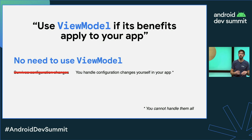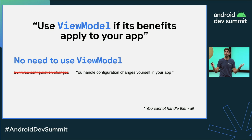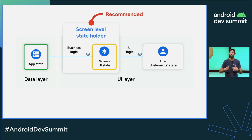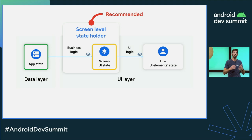For example, the wallpaper change on Android 12 and above devices cannot be handled. And let's say you don't need to use Navigation or Hilt because you have your own solutions — in that case, there is no need to use ViewModels. But we recommend introducing a screen-level state holder in your UI layer to simplify the UI so that it becomes more scalable and testable, even if you use a different implementation detail.